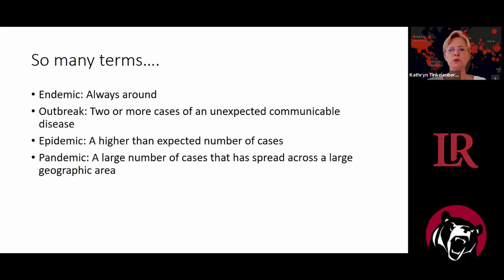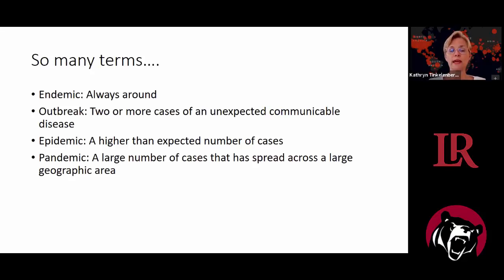An outbreak is whenever there are two or more cases of an unexpected communicable disease. It doesn't mean it's a new disease — just one that's not always around but we're seeing cases of. A good example is a foodborne illness at a picnic where people get sick from potato salad. With COVID-19, it started as an outbreak — a cluster of cases associated with a market in Wuhan, China, in late December.